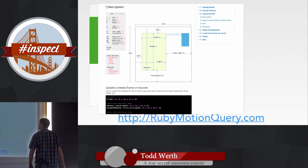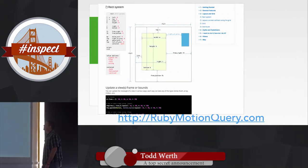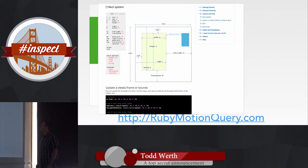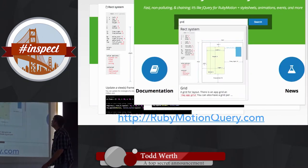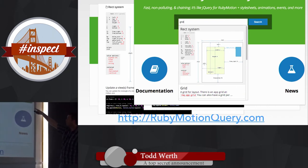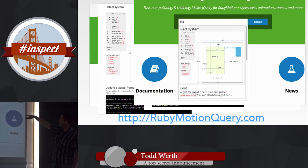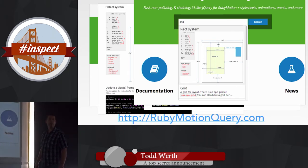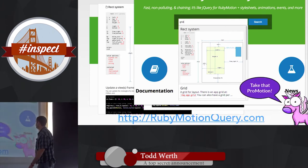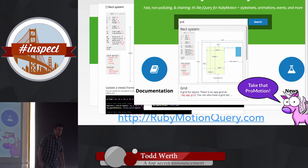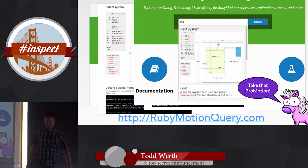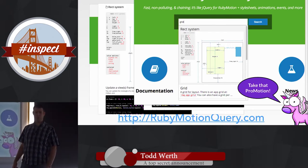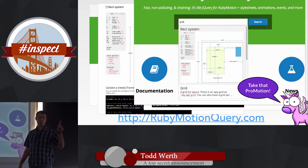The new rubymotionquery.com is up — I pushed this morning. Here's some of the documentation: the new rect system, stylesheets with lots of diagrams, cool search. When I searched 'grid' it found a diagram. And by the way, RMQ comes up number one in Google.